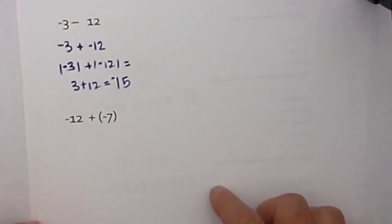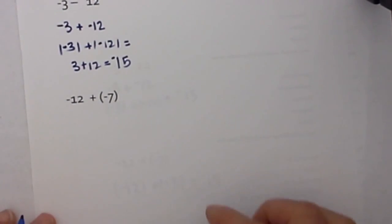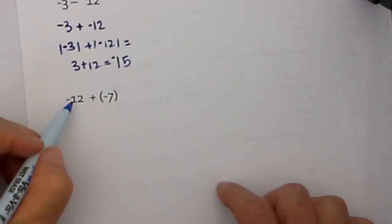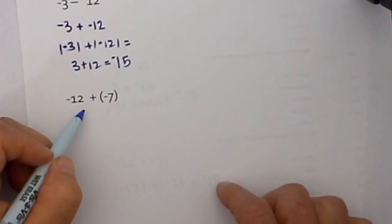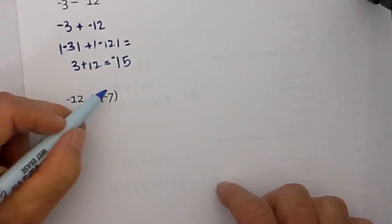And finally the last one. We have negative 12 plus negative 7. Is the problem addition? Yes. Are the signs the same? Yes.